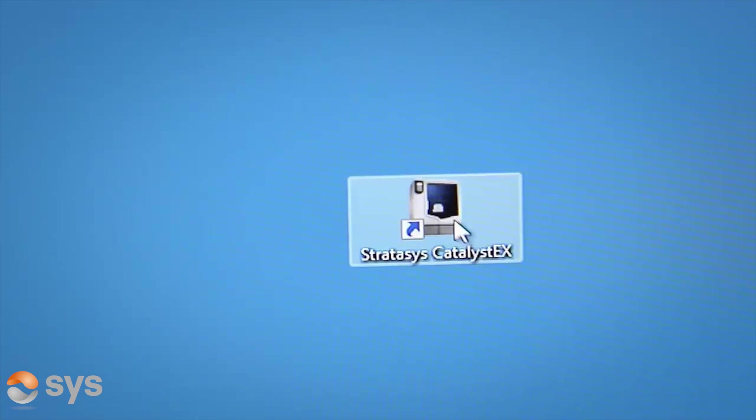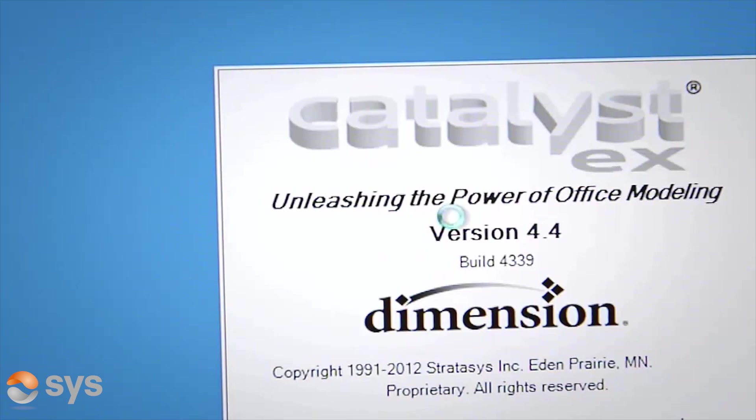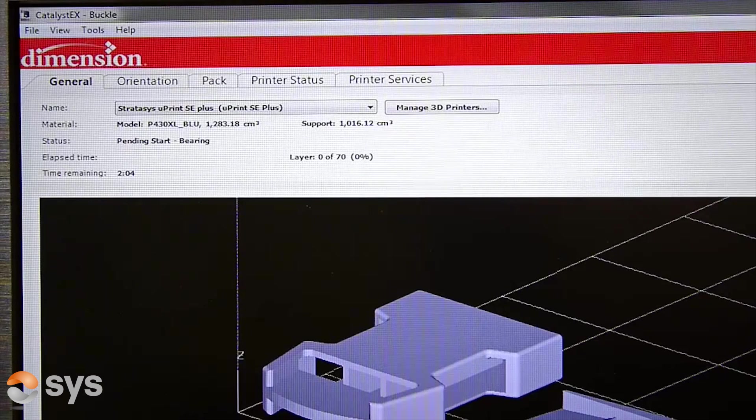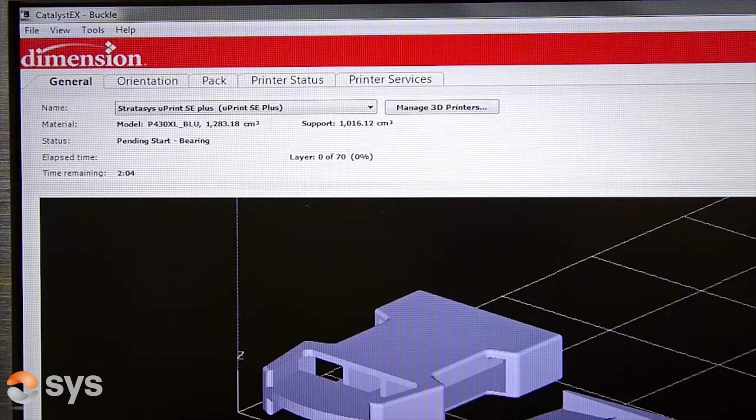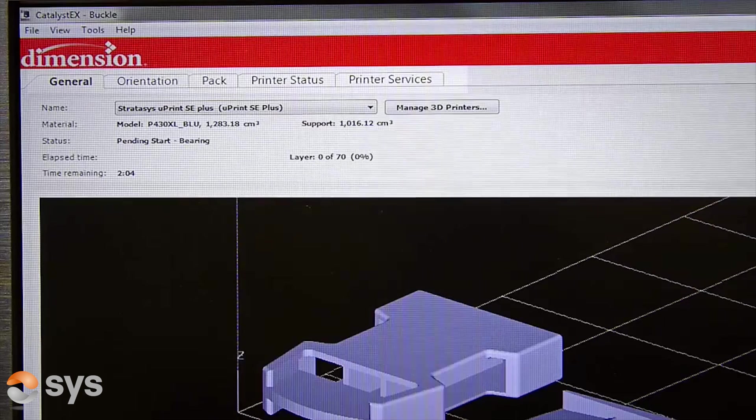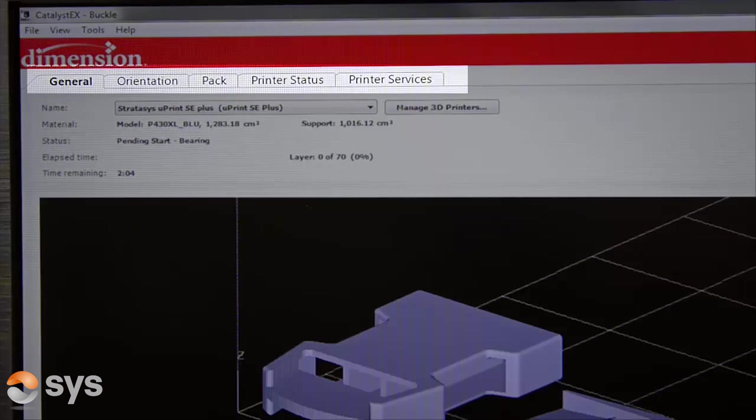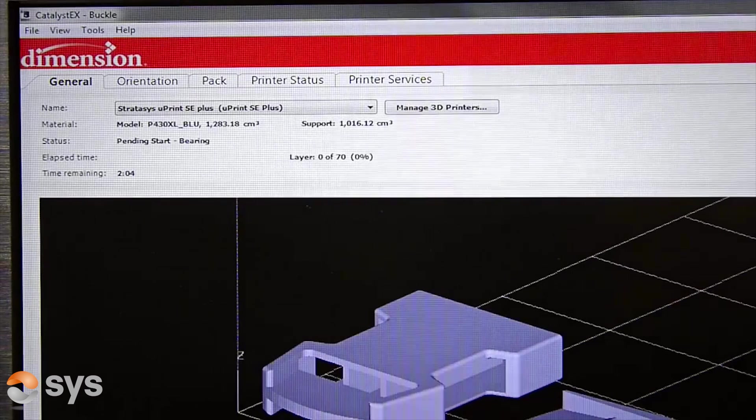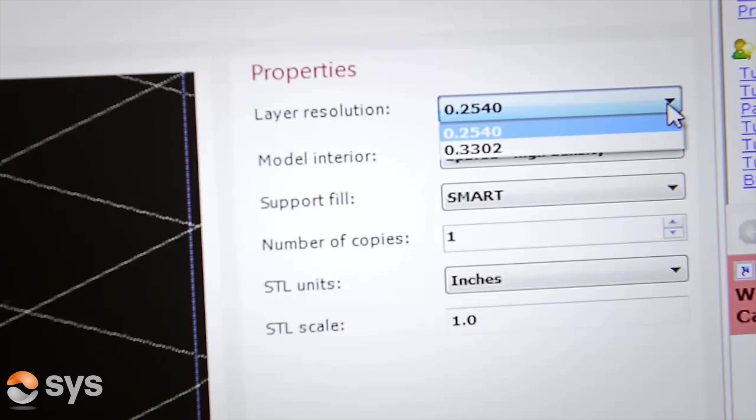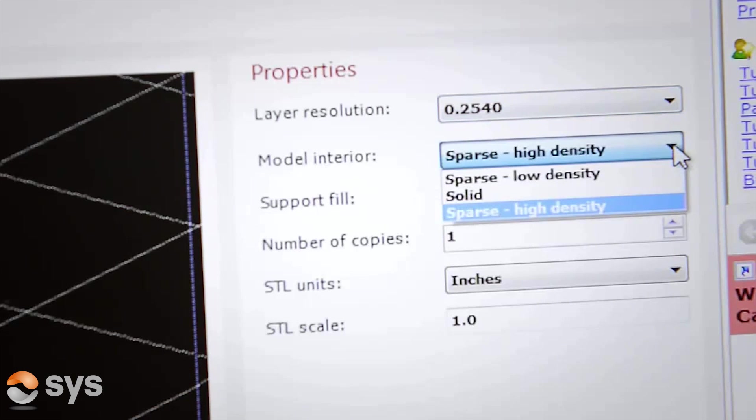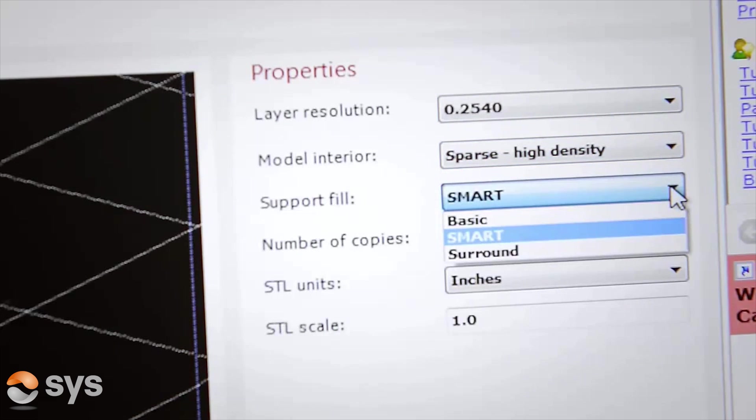Looking at the software, the Uprint SE Plus comes with Stratasys Catalyst EX software. The top menu tab reflects the process for preparing your design for printing. The general tab gives general machine status such as time remaining to print. Properties gives control over layer resolution as well as control settings for the use of the soluble support material.